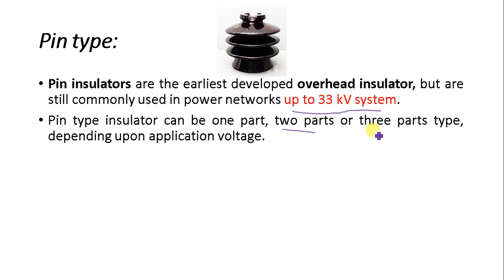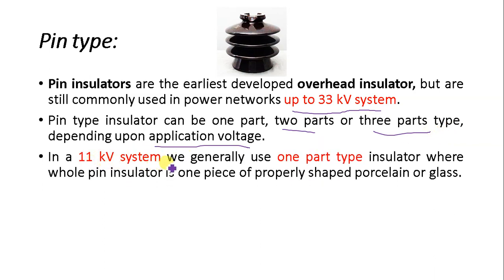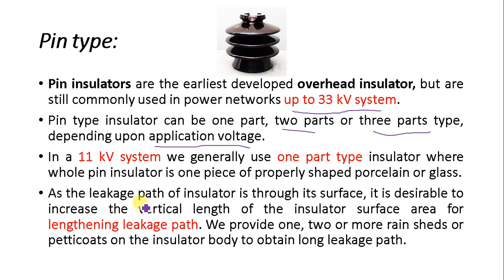Pin type insulators can be one part, two part, or three part type, depending upon the application voltage. For a 33 kV system we use three-part type, and for an 11 kV system we generally use a one-part insulator. When the insulator is one piece, it is properly shaped and the material used is either porcelain or glass.